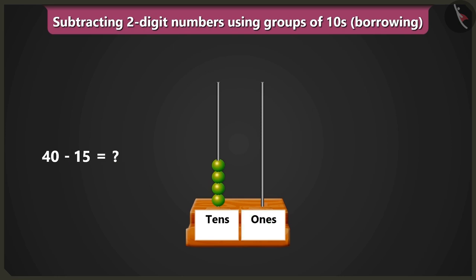Bubbly, we know that one ten means ten ones. So we will borrow one ten from four tens from the box of tens.